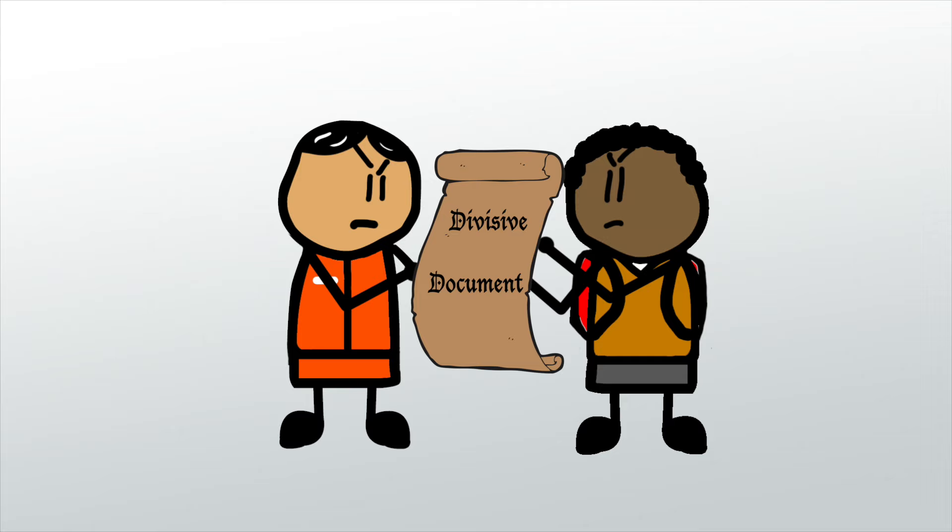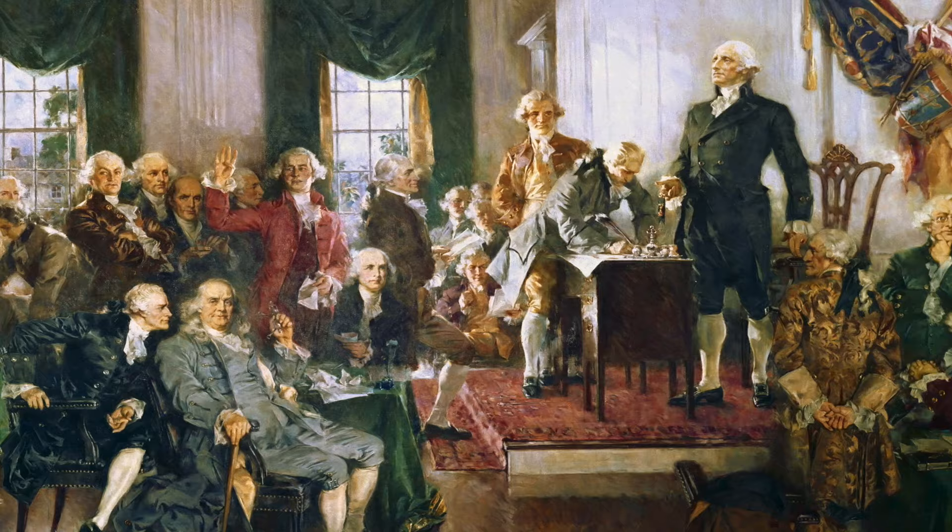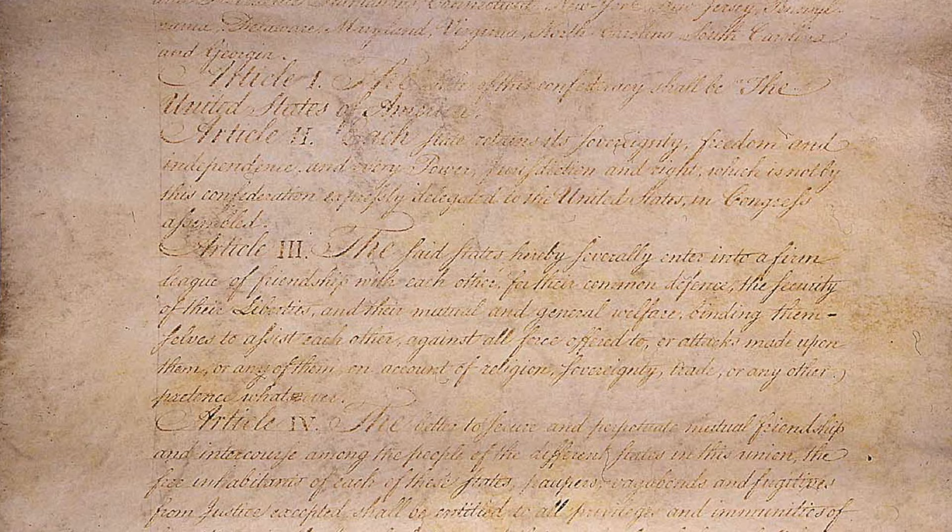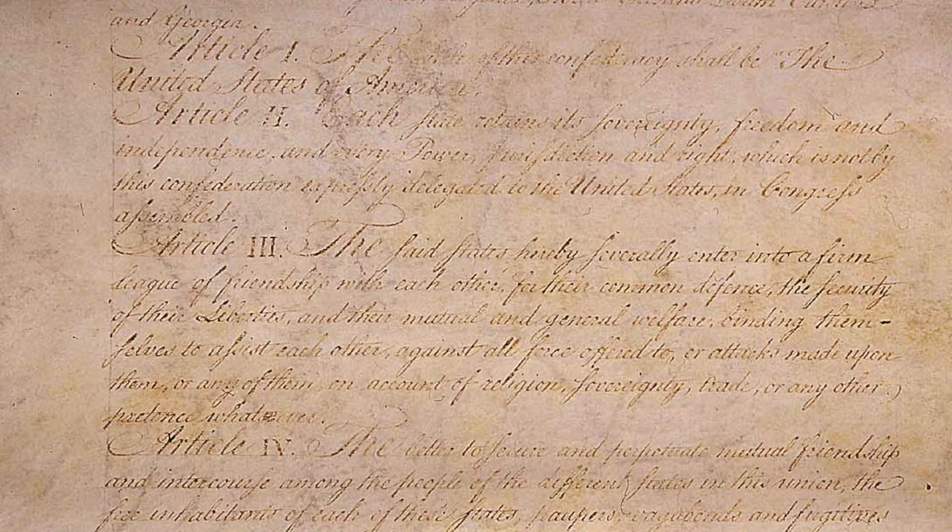In 1787, delegates came together at the Constitutional Convention to address national reform. The resolution of this debate became known as the Great Compromise of 1787 and resulted in the creation of the United States Constitution.